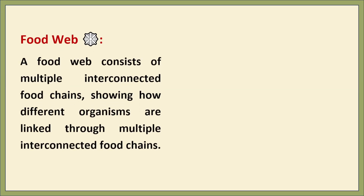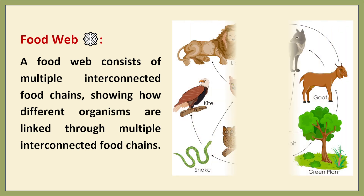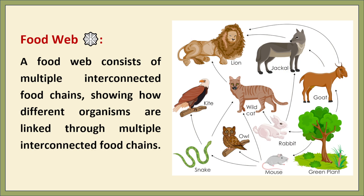Next is the food web. A food web is a more realistic representation of energy flow in an ecosystem. It consists of multiple interconnected food chains showing how different organisms are linked through feeding relationships. For example, in a forest ecosystem, a mouse is eaten by an owl, a snake, as well as a wild cat. A snake can be eaten by a kite, while a rabbit which eats trees and plants can be eaten by a jackal, and a jackal can be eaten by a lion. This is how a food web works.